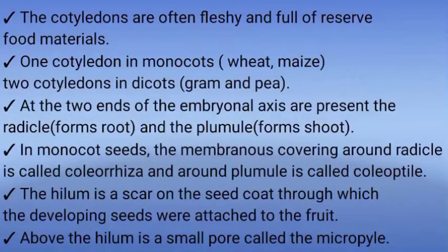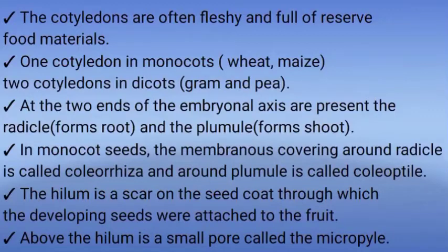Two cotyledons are present in dicotyledonous plants — example: gram and pea. At the two ends of the embryonal axis, one end is called the radicle and the other end is called the plumule.